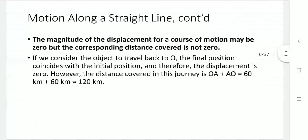The magnitude of displacement for a course of motion may be zero, but covered distance is not zero. If an object travels from origin O to point A and comes back to O, the total distance covered is 60 plus 60 = 120 kilometers. But the displacement is zero, because the starting point and final point are the same. So total distance is 120 km, but the magnitude of displacement is zero.